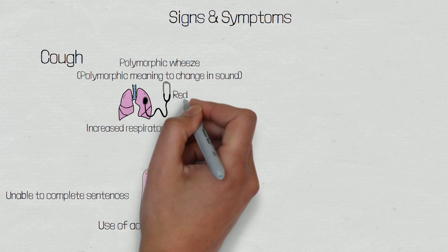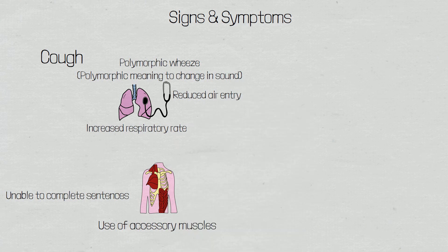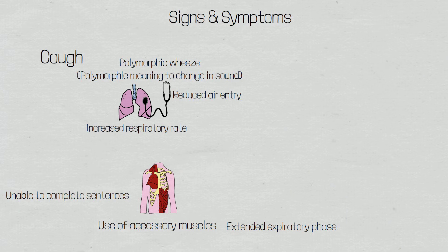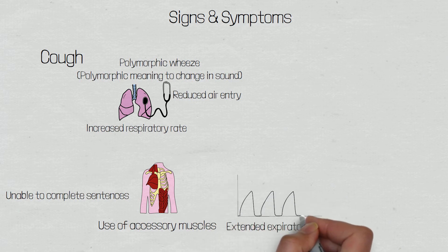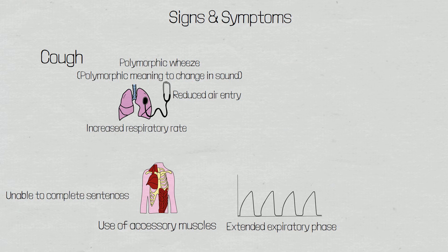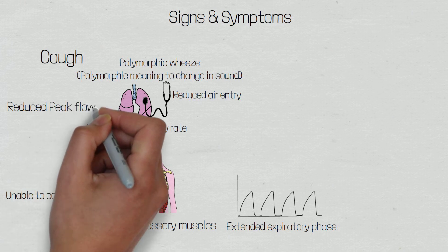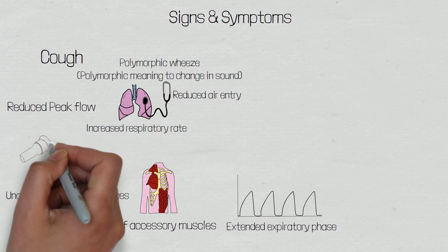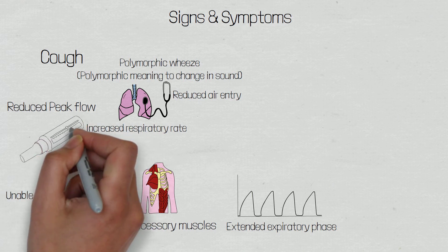Patients may also have reduced air entry on auscultation, due to the reduction in ventilation throughout the lungs. Because asthma is an obstructive lung disease, it means that these patients have a difficulty in getting air out of the lungs, as opposed to a restrictive lung disease, which causes difficulty in getting air into the lungs. Because of this, patients may have an extended expiratory phase, as it's taking longer for air to be exhaled. This extended expiratory phase can manifest on a capnogram, typically described as a shark fin pattern, which represents the difficulty in exhalation and the presence of bronchospasm. Patients may also have a reduced peak flow, and a peak flow measurement measures the fastest point of a person's expiratory flow, and you may see it referred to as peak expiratory flow rate, or PEFR.